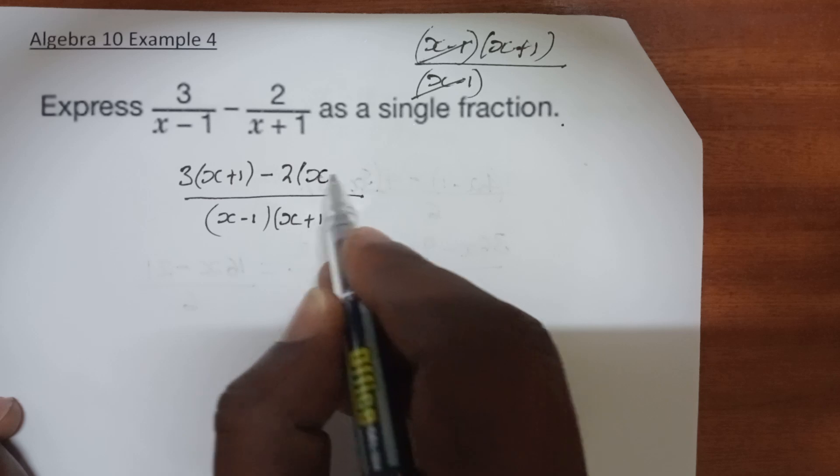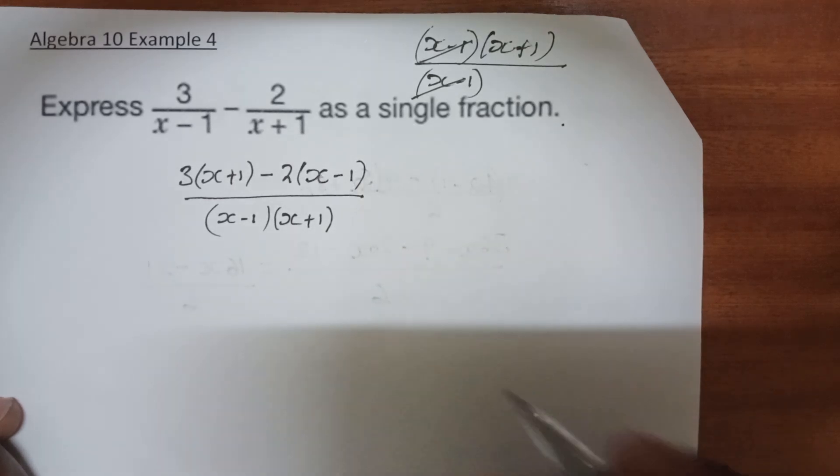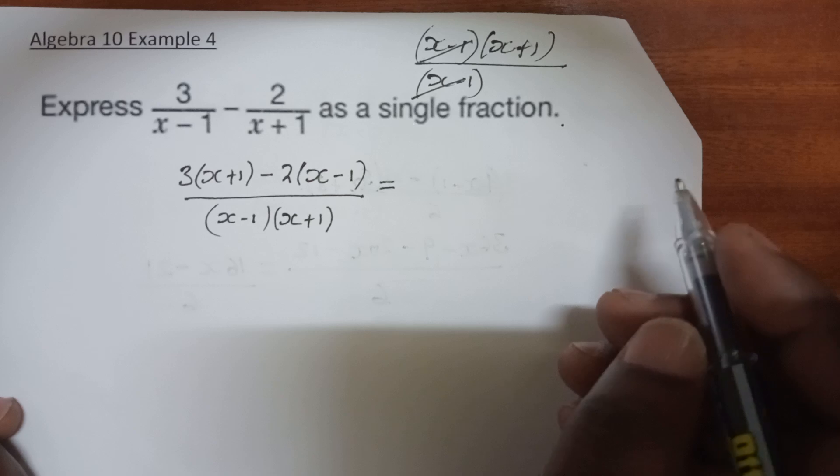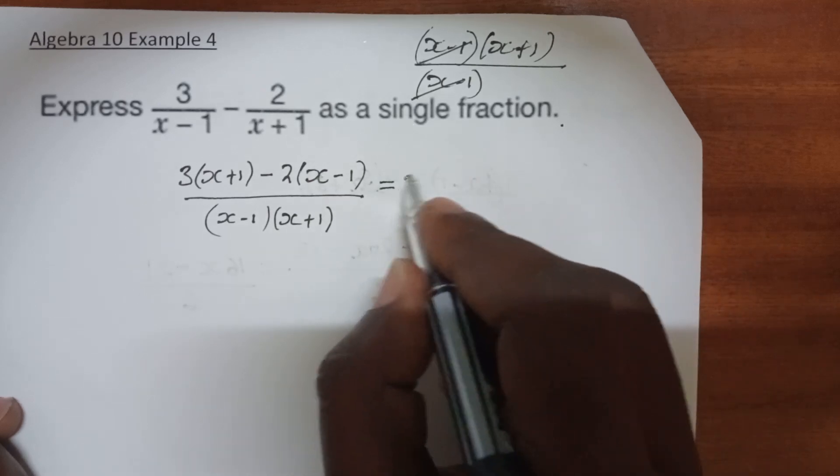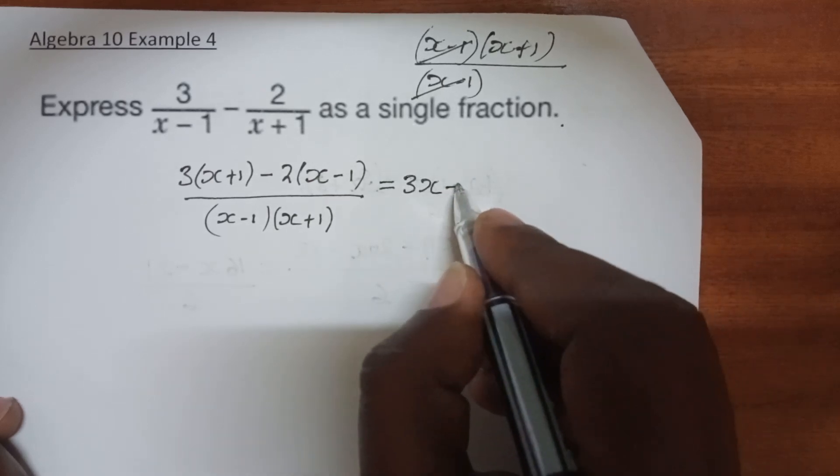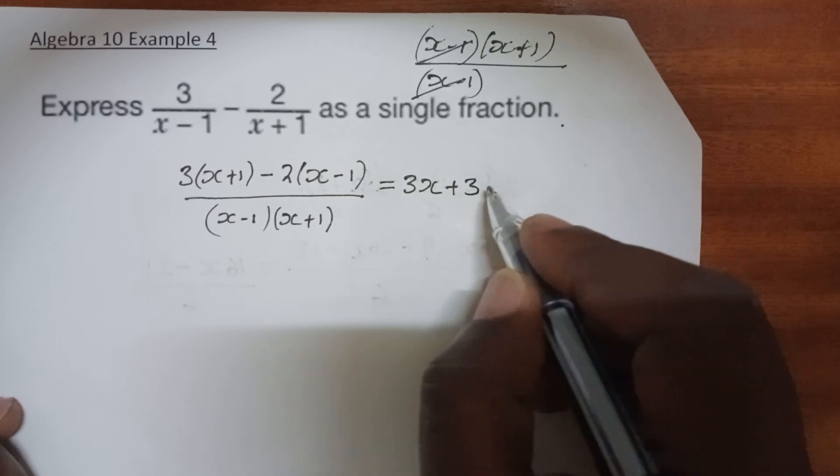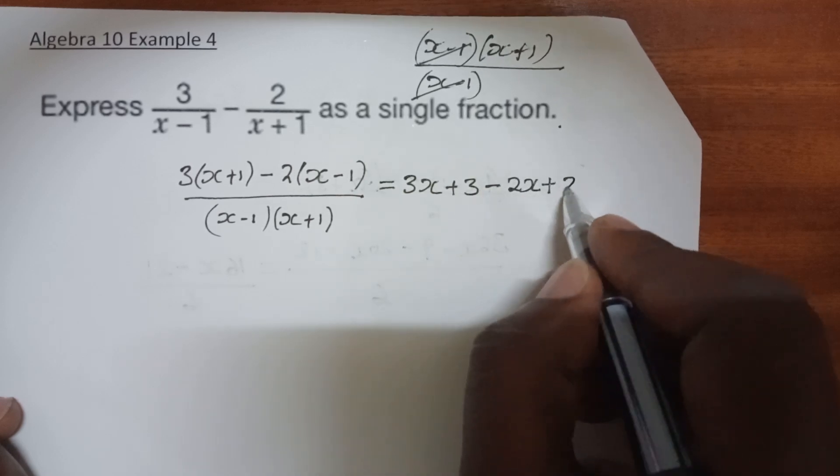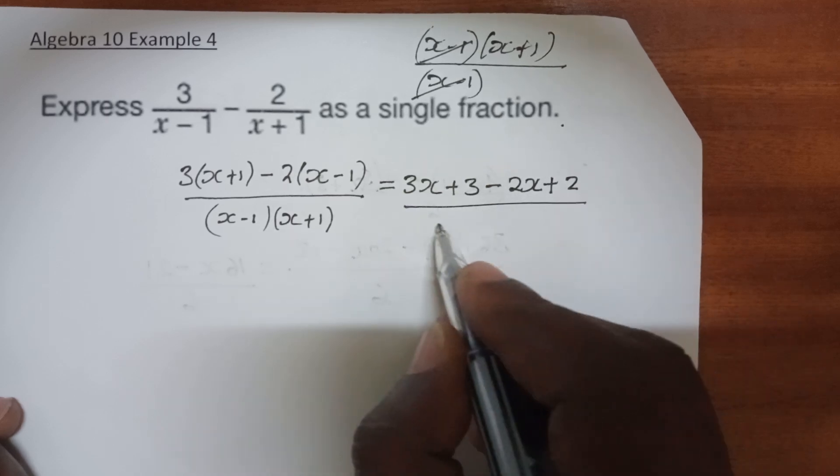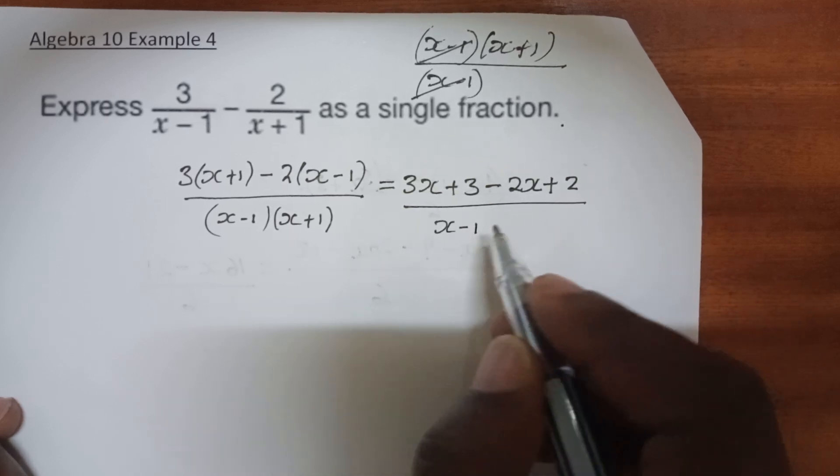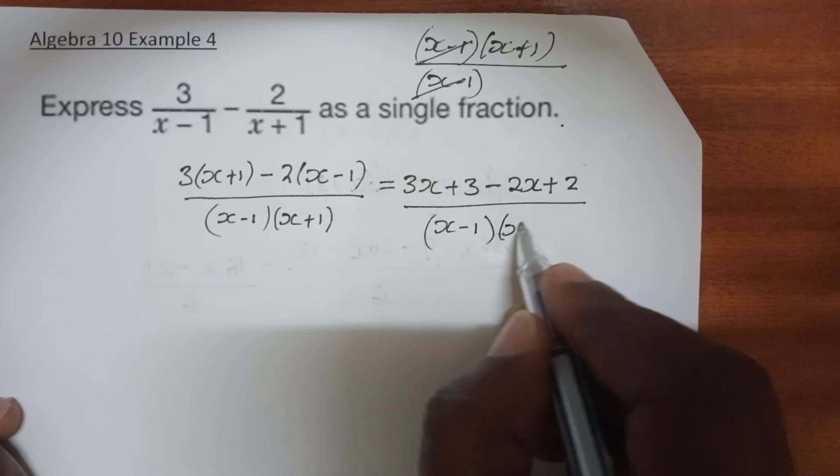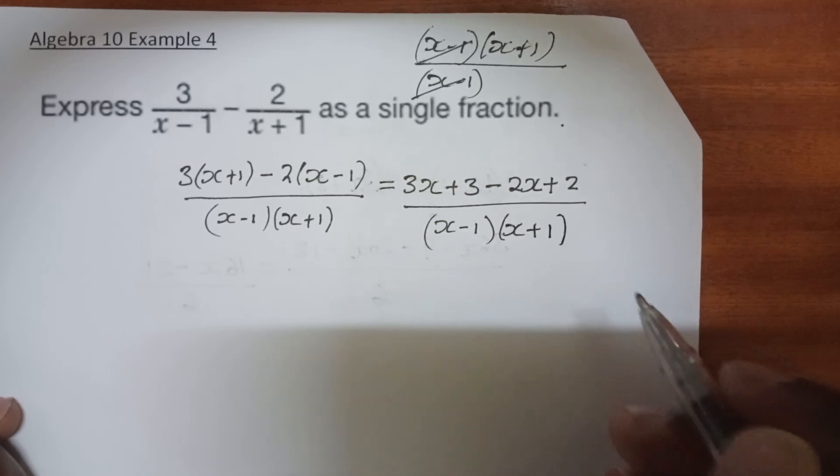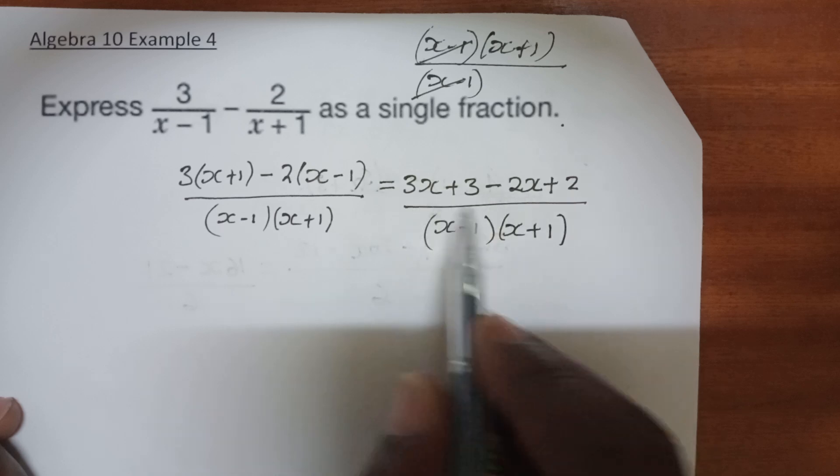So this now is the one which multiplies out 2. Now multiplying out or opening the brackets, we have 3x plus 3 minus 2x plus 2, all over (x-1)(x+1).